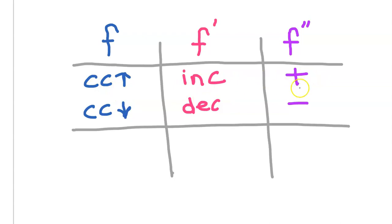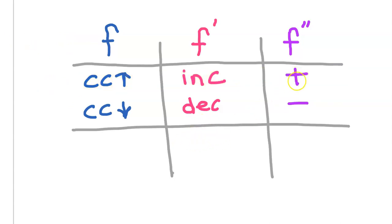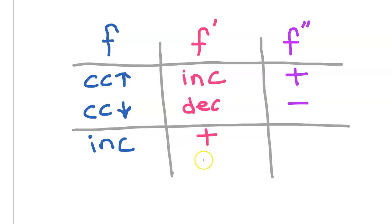So just memorize the order of these three things. From right to left, it goes positive, increasing, concave up. Now imagine that you took all three of these things and shifted them to the left by one space. So the positive will now be in the column for the first derivative. If the first derivative is positive, then the original function is increasing. Reversing each of these: if the first derivative is negative, then the original function is decreasing. I need you to memorize this chart, or at least be able to draw it very quickly in the margin of your paper.